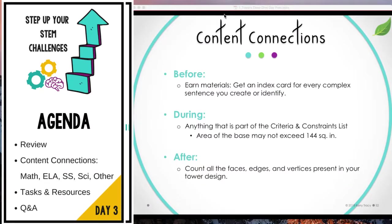Your content connections can be made either before, during, or after a challenge. Before: you can have students earn their materials. For example, if you're using index cards for the tower challenge, you could give them an index card for every complex sentence they create or identify in a mentor text. During: anything you've made part of the criteria and constraints list — like a base that may not exceed 144 square inches — gives them practice with content during the actual build. And many content connections are actually going to occur after the challenge is over.